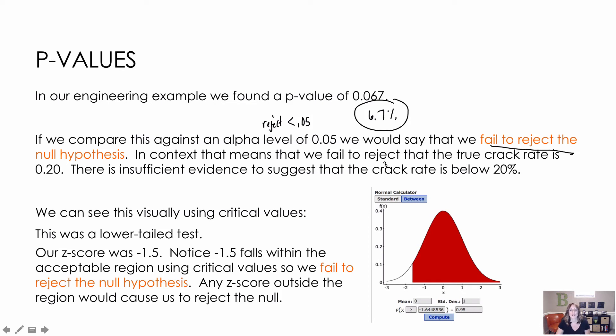So that means we're failing to reject that the crack rate is 20% because that was our null. We're saying, we don't have enough information to say that the crack rate is different than 20%. So there's insufficient evidence to suggest that the crack rate is below 20%.